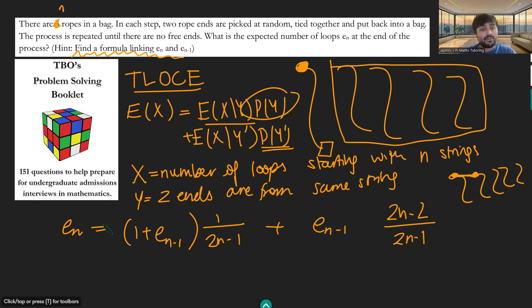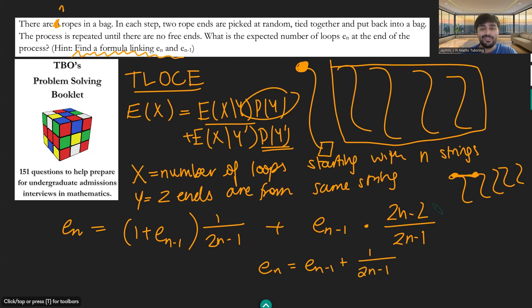Putting it all together gives us this nice recurrence relation: En equals 1 plus En minus 1 times 1 over 2n minus 1, plus En minus 1 times 2n minus 2 over 2n minus 1. Simplifying this gives us En equals En minus 1 plus 1 over 2n minus 1. So we have this really interesting recurrence relation, and now we're going to try to solve it.